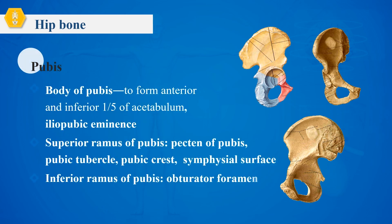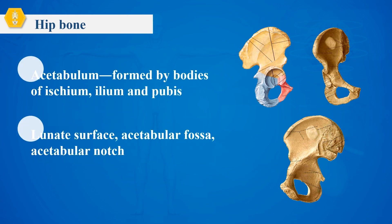Pubic bone. The pubic bone is located in the part of the hip bone divided into two branches, upper and lower. The upper edge of the upper branch is sharp and thin, called the pubic crest, and ends as the pubic tubercle anteriorly. Medial to the transition of the superior and inferior pubic branches, there is an oval pubic symphysis surface.